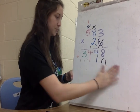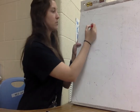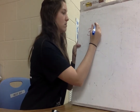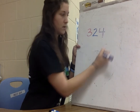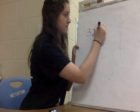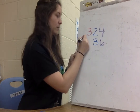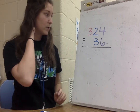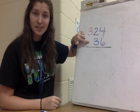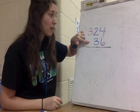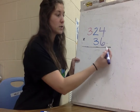Let's try one more together. The next one is 324 times 36. We're going to multiply these using standard algorithm. Think of it this way: if I had 324 boxes of oranges and each box had 36 oranges, to find the total I'd need to multiply. So we're going to start with 6 times 4.